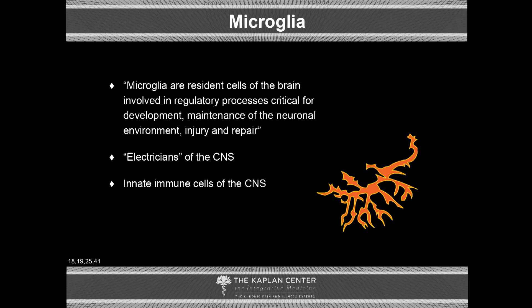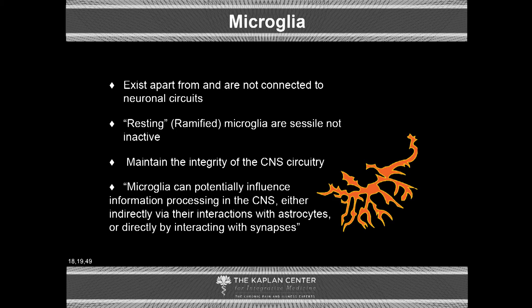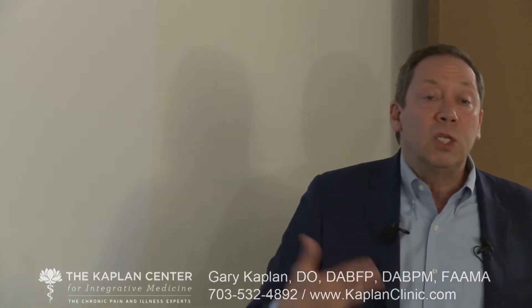Microglia are the electricians of the CNS. They're constantly helping repair damage to neurons, and they form the innate immune system of the central nervous system. The innate immune system's job is to respond instantaneously and stereotypically — always the same response — to a problem. The acquired immune system is about antibodies, learning what an antigen is and making specific chemicals to attack and protect against it. The innate immune system just responds the same way every time. Microglia maintain the circuitry of the CNS.